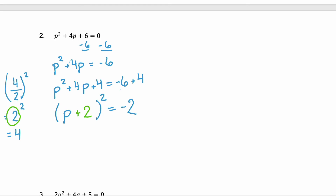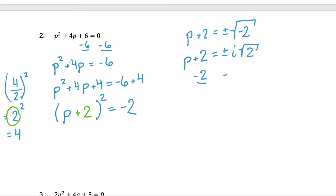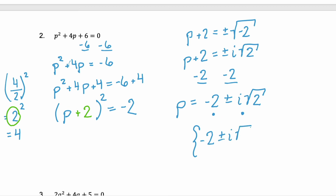Now we can use the square root property: p plus 2 equals plus or minus the square root of negative 2. Let's simplify the square root of negative 2 — that's plus or minus i square root of 2, since we took the square root of negative 1 and got i. Isolating p, subtract 2 from both sides: p equals negative 2 plus or minus i square root of 2. Remember, you need the real number component first and the imaginary component second. The solution set is negative 2 plus or minus i square root of 2.